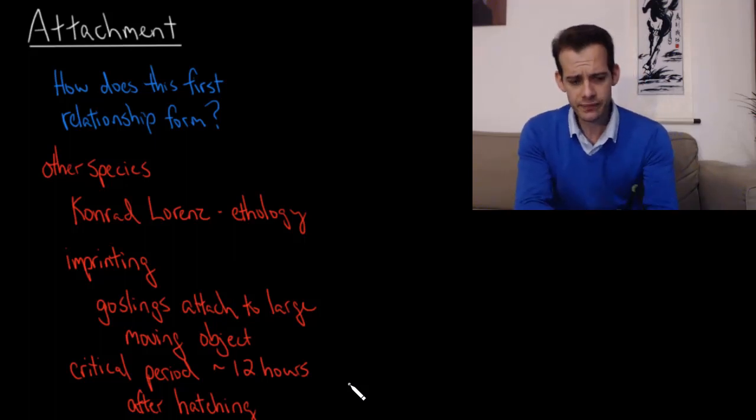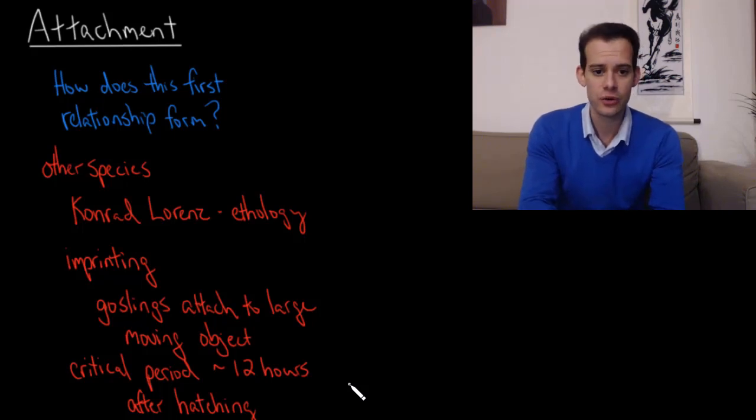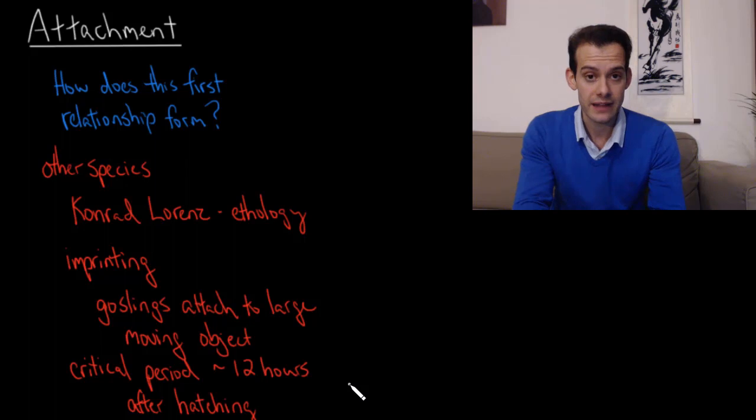He found that young goslings will attach to the first large moving object that they see, and then they would simply follow it around. Generally this would be the mother—the goslings would hatch, they would see their mother, and then they would follow her around until they were old enough to be more independent.